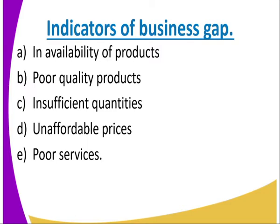Number two: poor quality products. For example, in food stores — if the hotels in that place are producing poor quality food, then if you improve the quality, you can have that business. So there is a business gap in the provision of good quality products. Number three: insufficient quantities — the goods are inadequate or not enough.